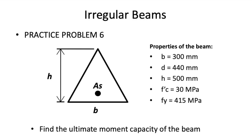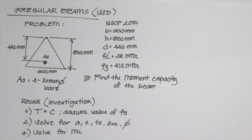Welcome back for another session in solving problems regarding the design of reinforced concrete beams under the USD method. We will try to solve irregular beams under the ultimate strength design method. I made a sample problem where the beam will be triangular and we need to find the moment capacity of the beam.